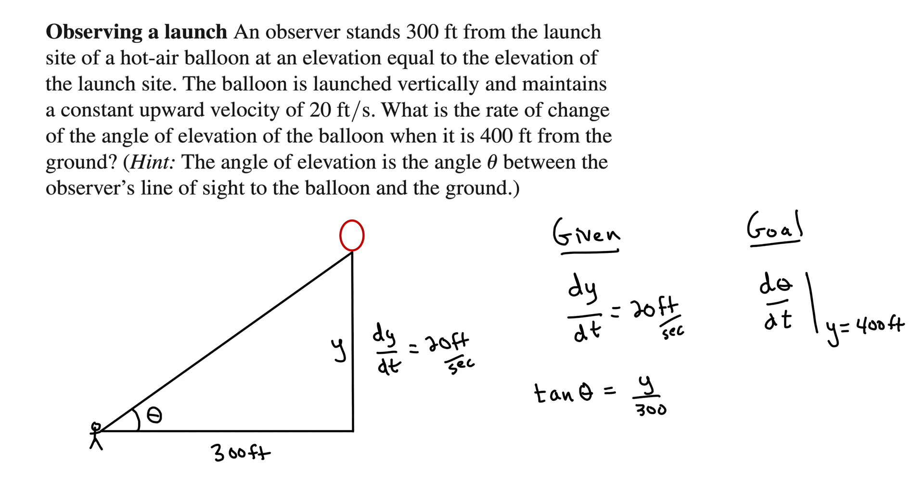We have a nice equation that ties everything together. Once we have that, we take the time derivative of both sides. We did the relate part, now we're doing the rate part. A little bit of chain rule here. We have derivative of tan theta is secant squared theta times d theta dt equals 1 over 300 times dy dt.